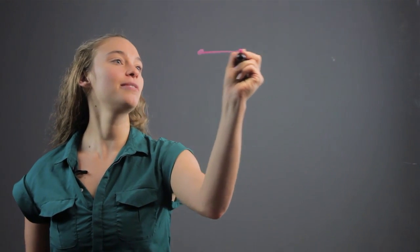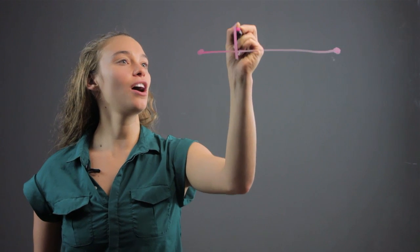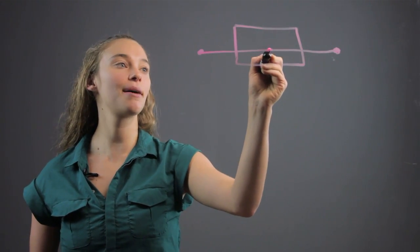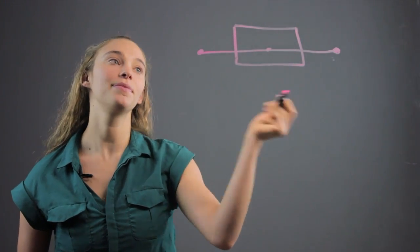Well, in a box and whisker plot, we have it written on a number line, so we actually have all the numbers should be written on this number line that are in the data.